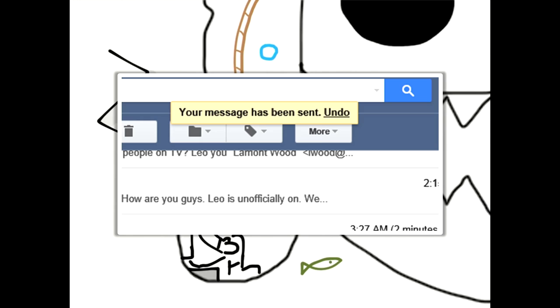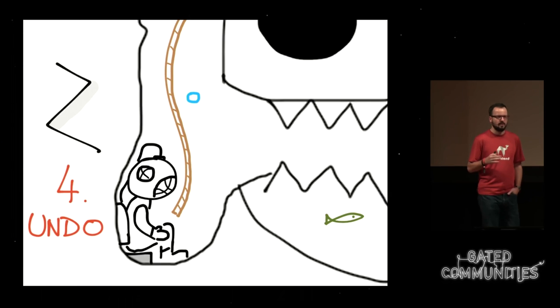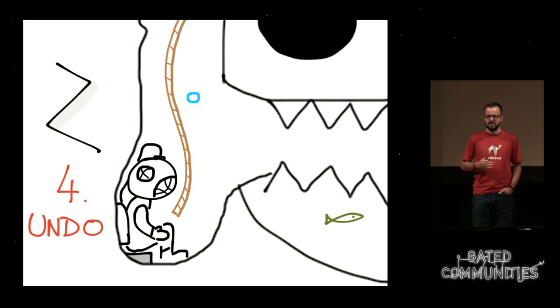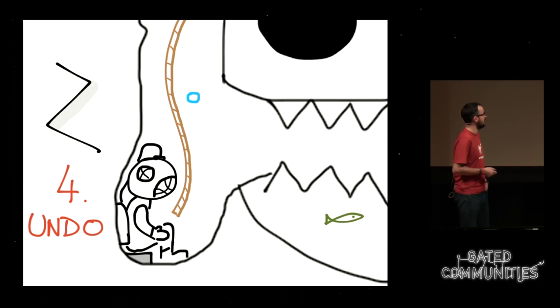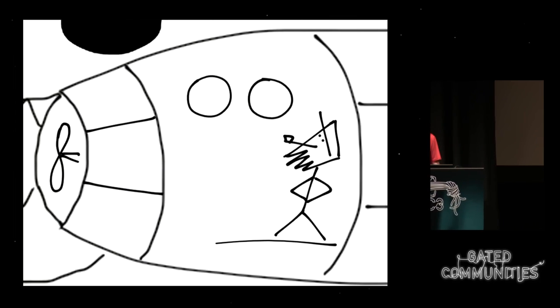You can only imagine what happens if you send a wrong email to the wrong people. If you use Gmail and have this function turned off, I suggest you turn it on. The first important point is the undo function — not only undo, but any possible option to recover from errors. Our Captain Nemo can now recover from the deep hole and finally he found his famous submarine, Nautilus.